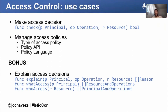You get a principal, you get an operation that the principal is trying to perform, and then you get a resource over which this operation is going to happen. Then there is a response which is either allow or deny — that's the typical use case about access control.